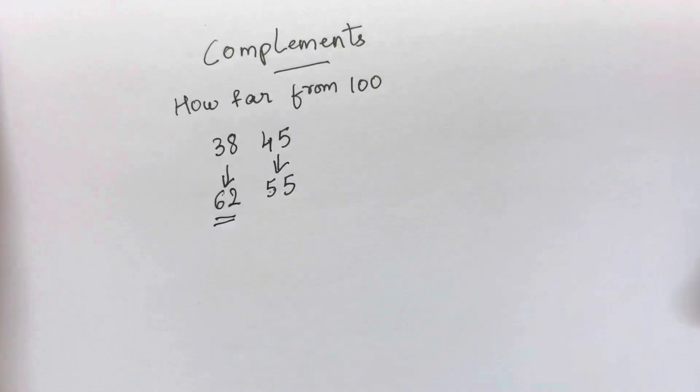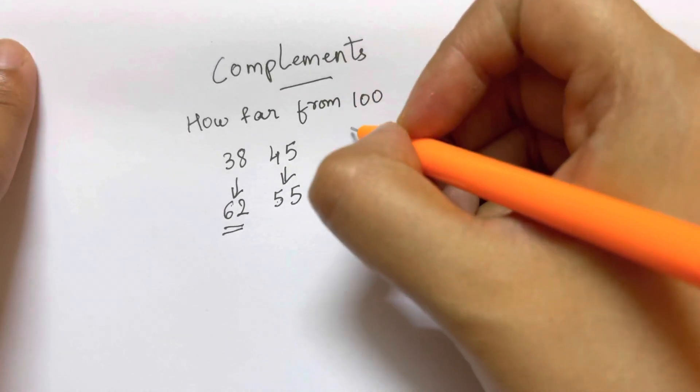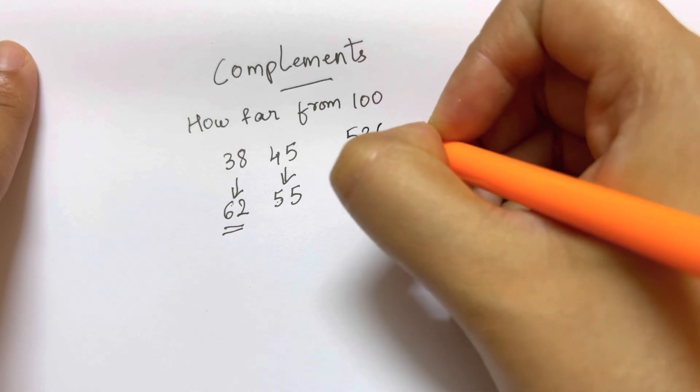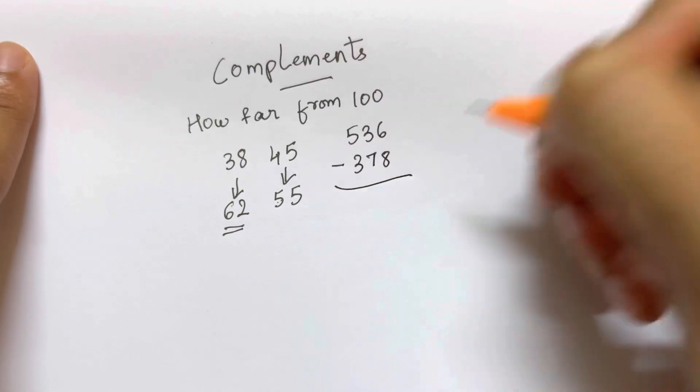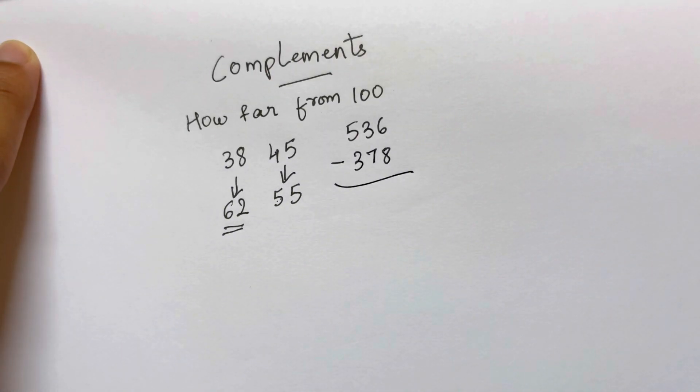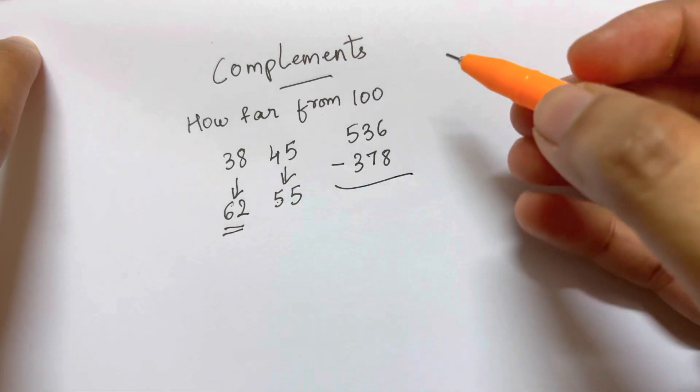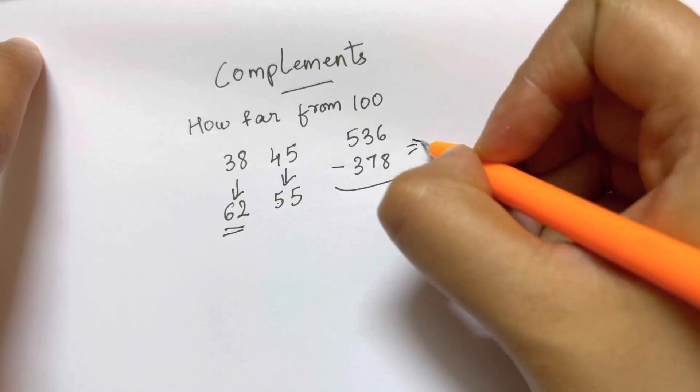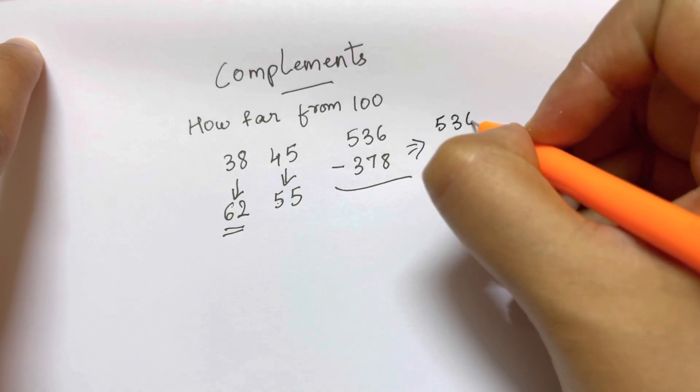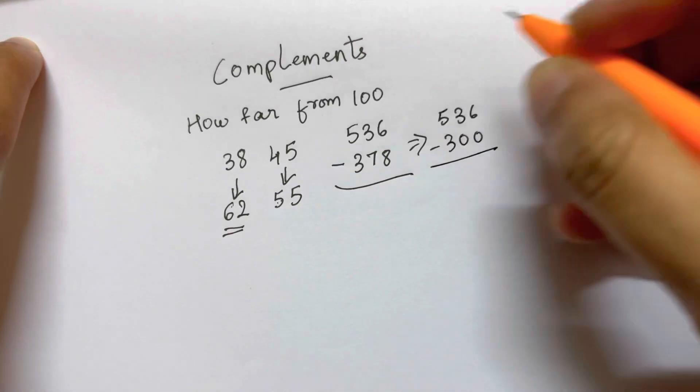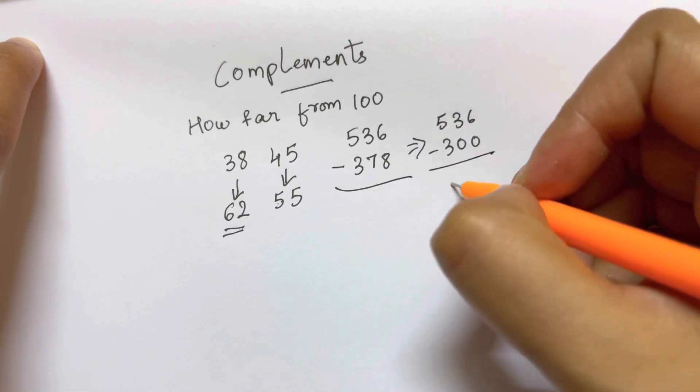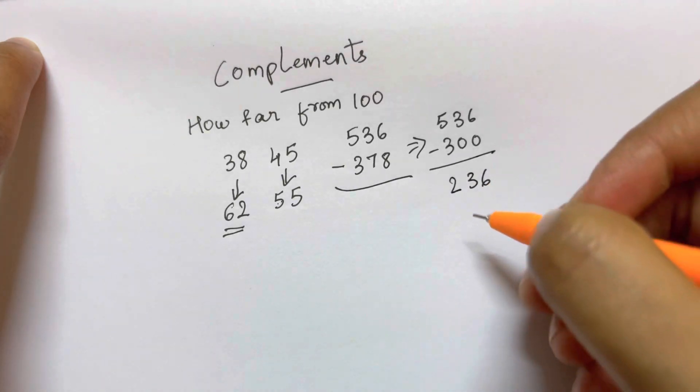Now, I'm going to give you an example. Like we are going to do 536 minus 378. Subtraction of these numbers. 536 minus 378. So what are we going to do? We are just going to do 536 minus round of 300. It is super easy for you to subtract. 5 minus 3. You will get 236.